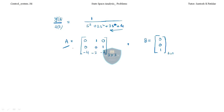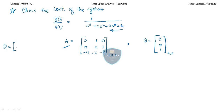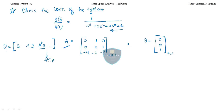This question asks to check the controllability of the system. So we need only A and B. The order is 3, meaning Qc will have terms up to A²B. The formula is Qc = [B, AB, A²B] since n = 3 and the last term is A^(n−1)B = A²B.